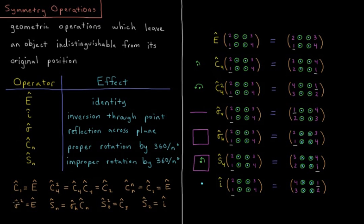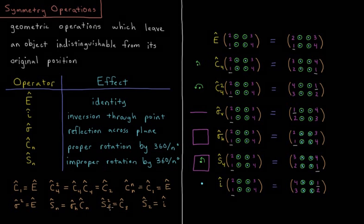Remember, sigma squared is identity. If I do sn twice, then I end up not doing the sigma at all, or equivalent to not doing it at all.